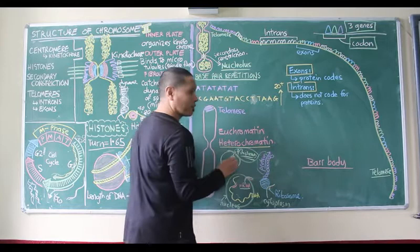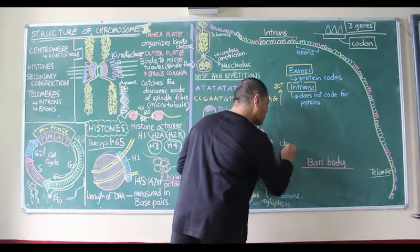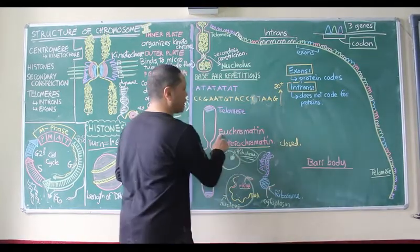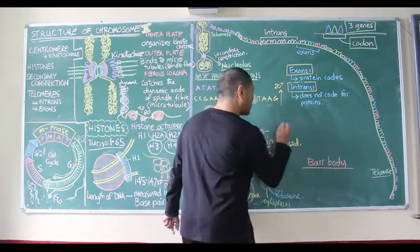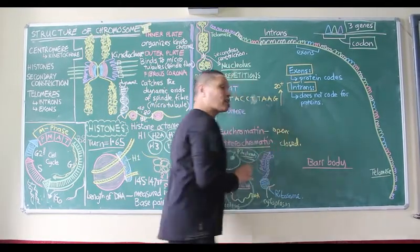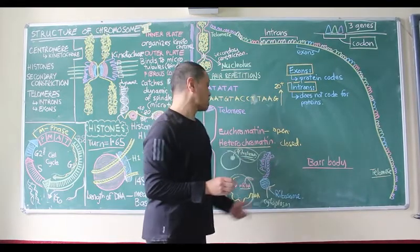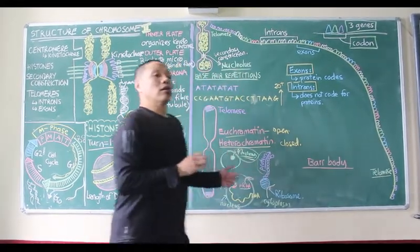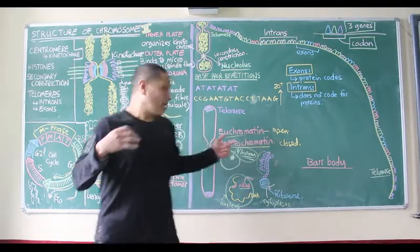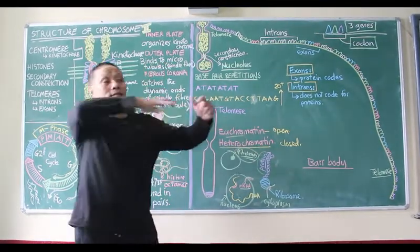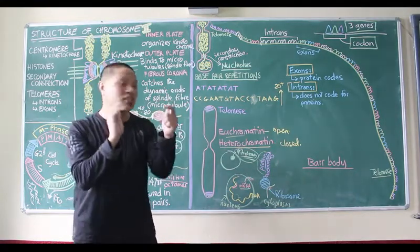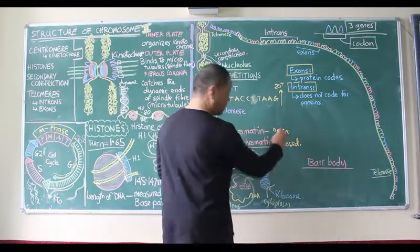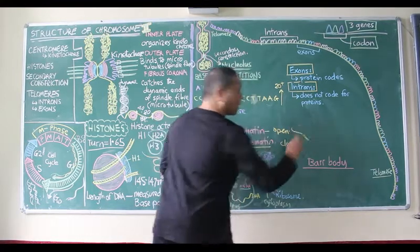Where the DNA remains closed is heterochromatin, and euchromatin is the DNA which actually opens up so the mRNA can read the codes. The DNA does not have to open up completely—the whole stretch of the DNA does not open up. Only certain portions can open up and then be copied.